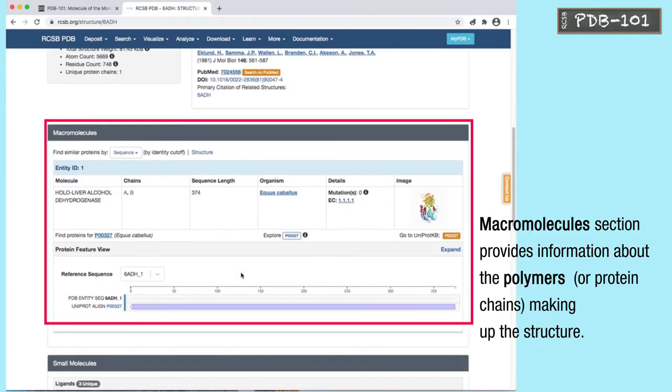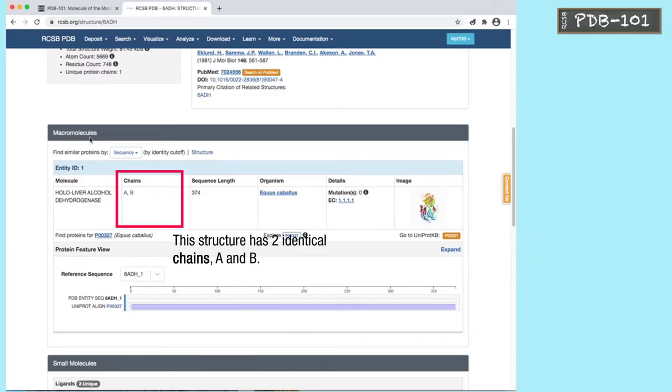The macromolecule section provides information about the polymers or protein chains making up the structure. This structure has two identical chains A and B.